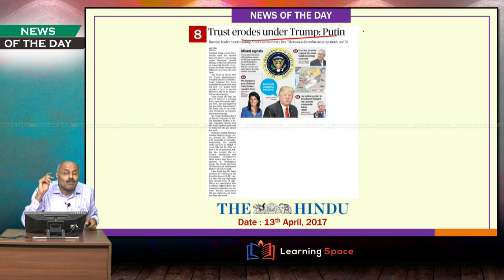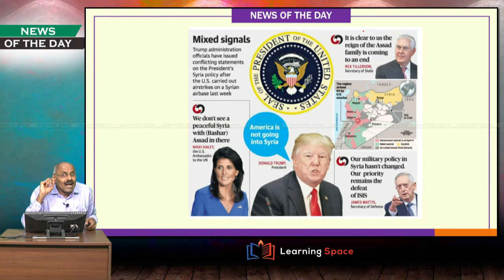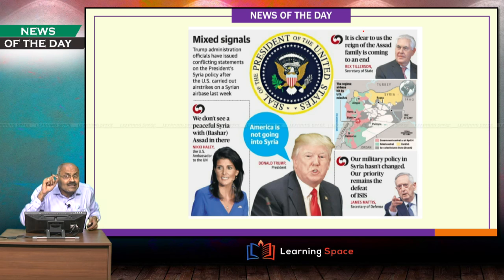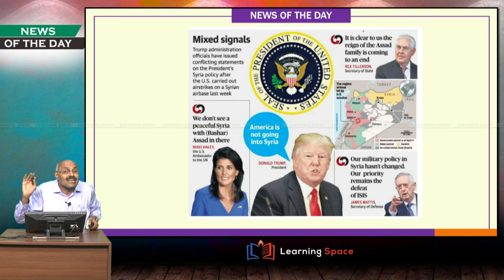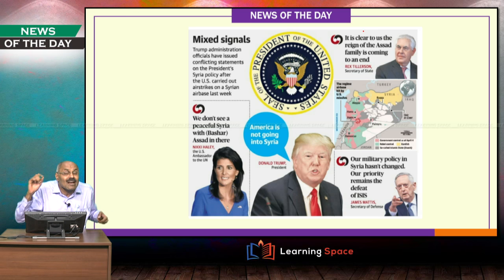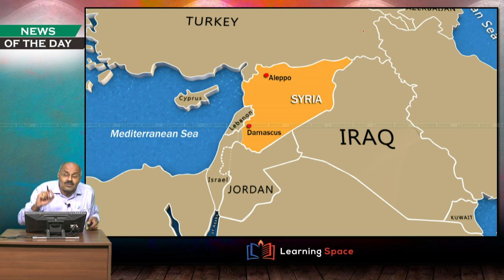Trust erodes between Trump and Putin. The gap is widening between the two, and statements by US officials are inconsistent with each other. Both Putin and Trump are totally unpredictable persons, and when two unpredictable persons are there, totally unexpected things are bound to happen. This is with regard to the Syria incident.